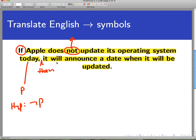The second sentence is, it will announce a date when the operating system will be updated. There's no negations and no other ands or or statements. So this sentence by itself is as simple as possible. Let's call that Q.